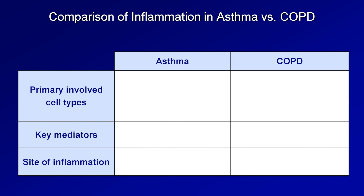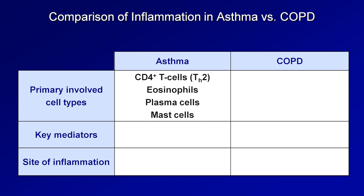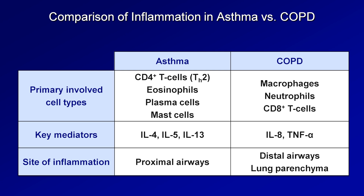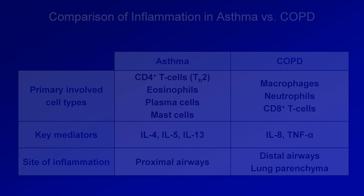I'll end with a chart comparing the inflammation seen in asthma with that seen in COPD. In asthma, the primary cell types involved are CD4 T cells (specifically type 2 helper T cells), eosinophils, plasma cells, and mast cells. In COPD, inflammation predominantly involves macrophages, neutrophils, and CD8 T cells. The key chemical mediators in asthma are IL-4, IL-5, and IL-13, while in COPD they are IL-8 and TNF-alpha. The predominant site of inflammation in asthma is the proximal airways, while in COPD it's the distal airways and lung parenchyma. That concludes this video on the pathogenesis and pathophysiology of asthma and COPD. The next video in this series will discuss the diagnosis and management of stable disease.